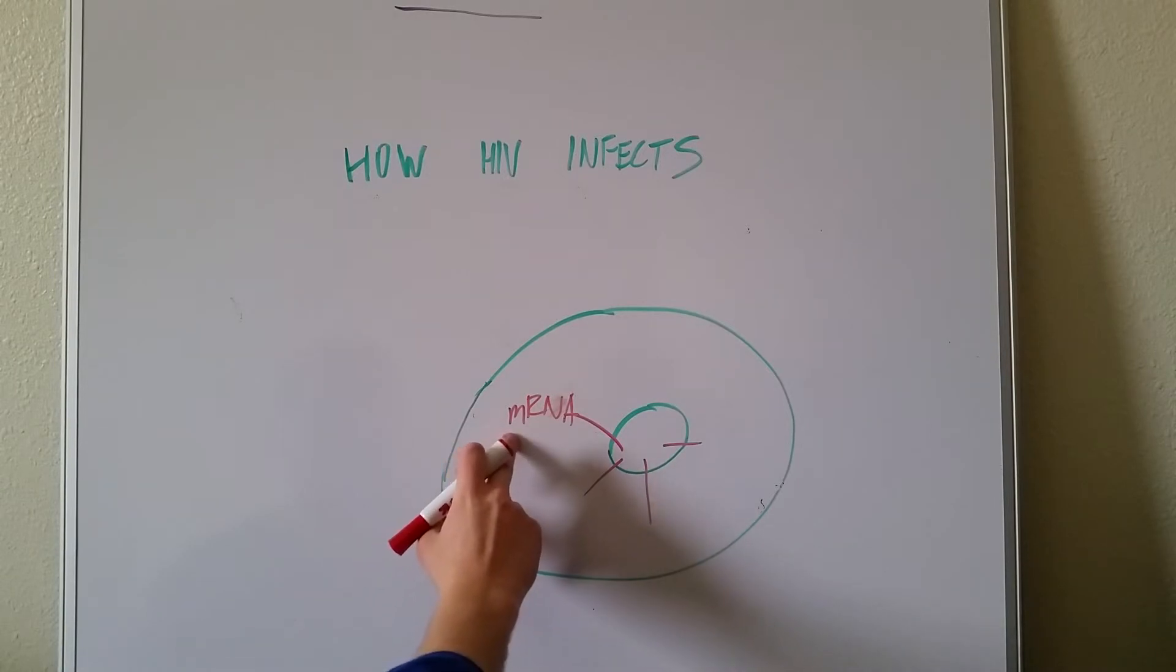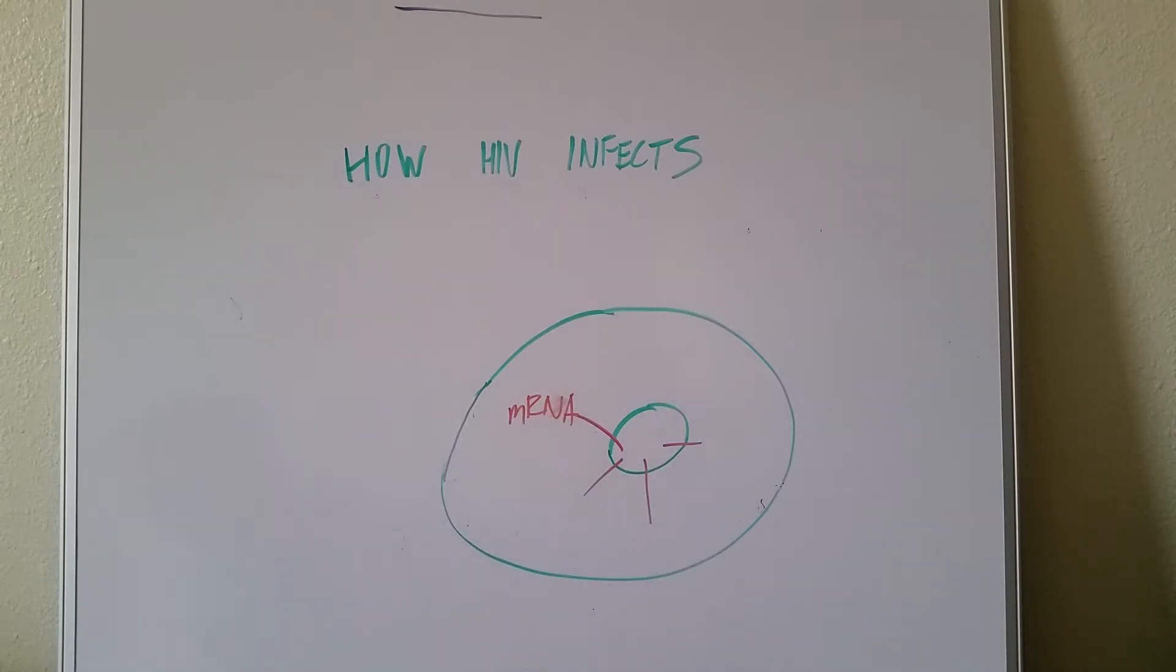What you get at the end is these messenger RNA, which then leave the nucleus to the cytoplasm, and while they're there, this is where they start being prepared to go infect other cells, right? Because the virus wants to keep on replicating.